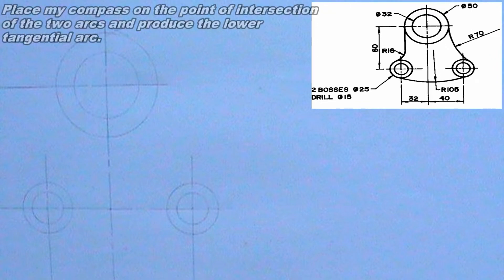I will place my compass on the point of intersection of the two arcs. Then I will produce the lower tangential arc with a radius equal to the given radius of the tangential arc, which is 105mm.